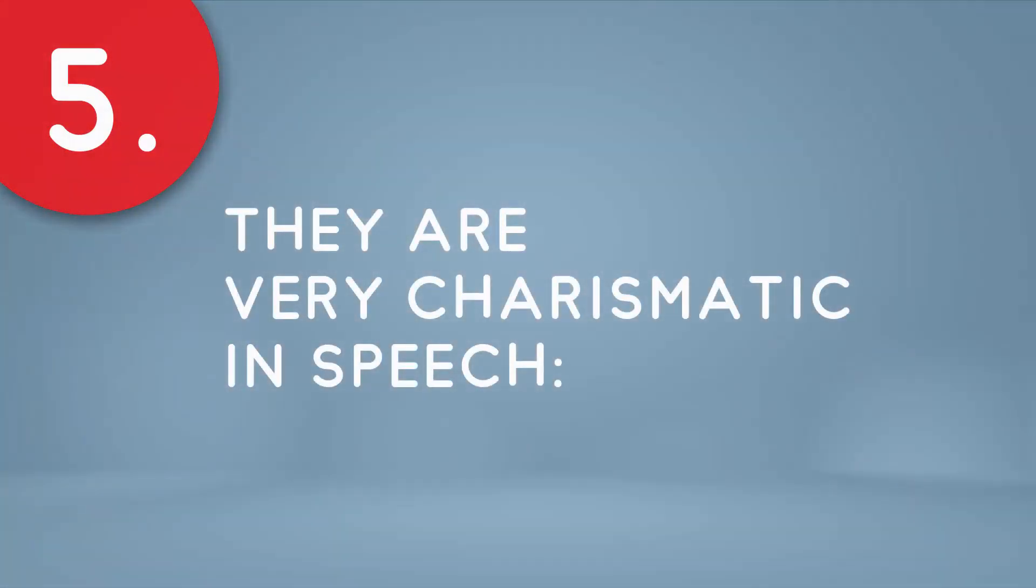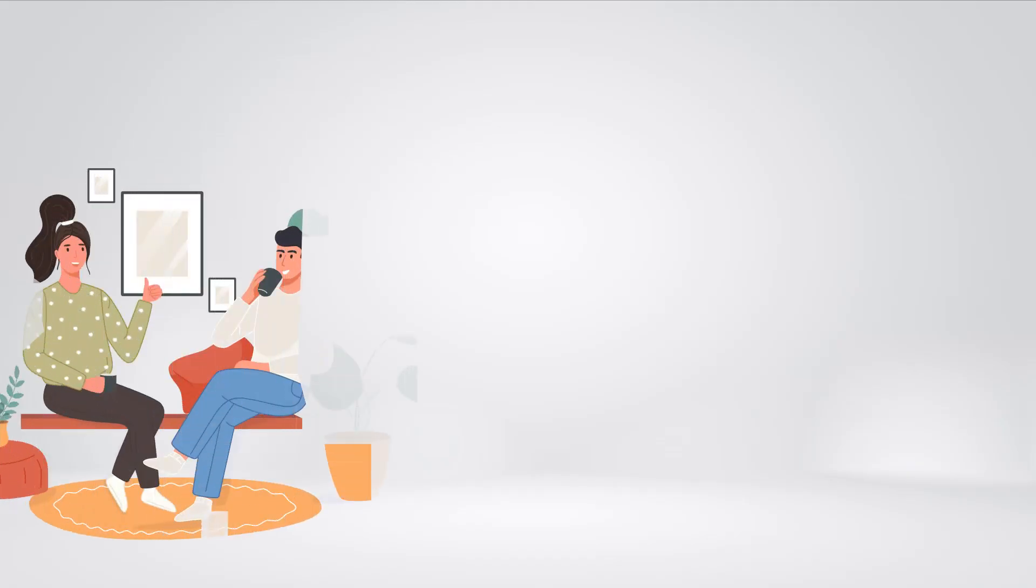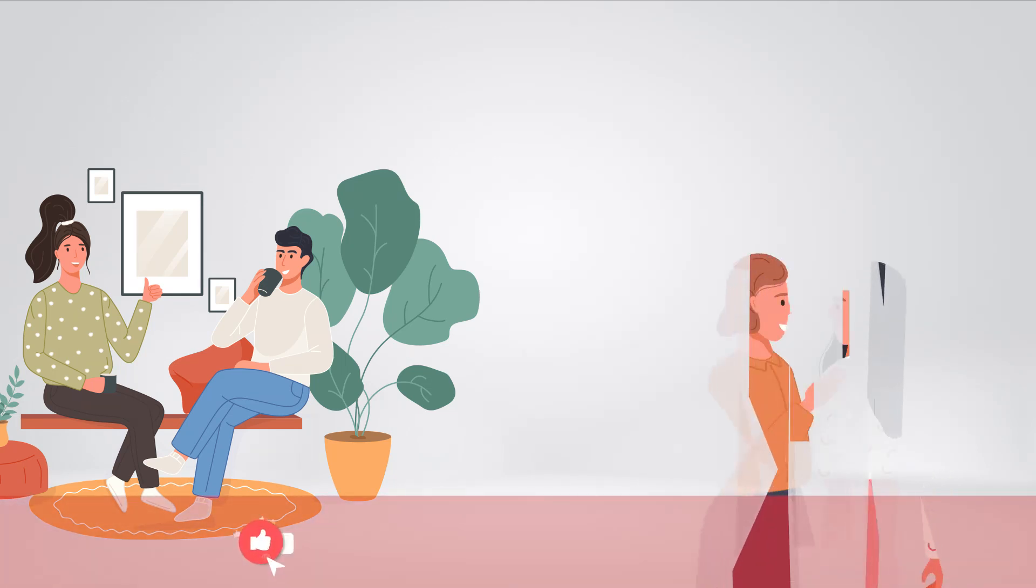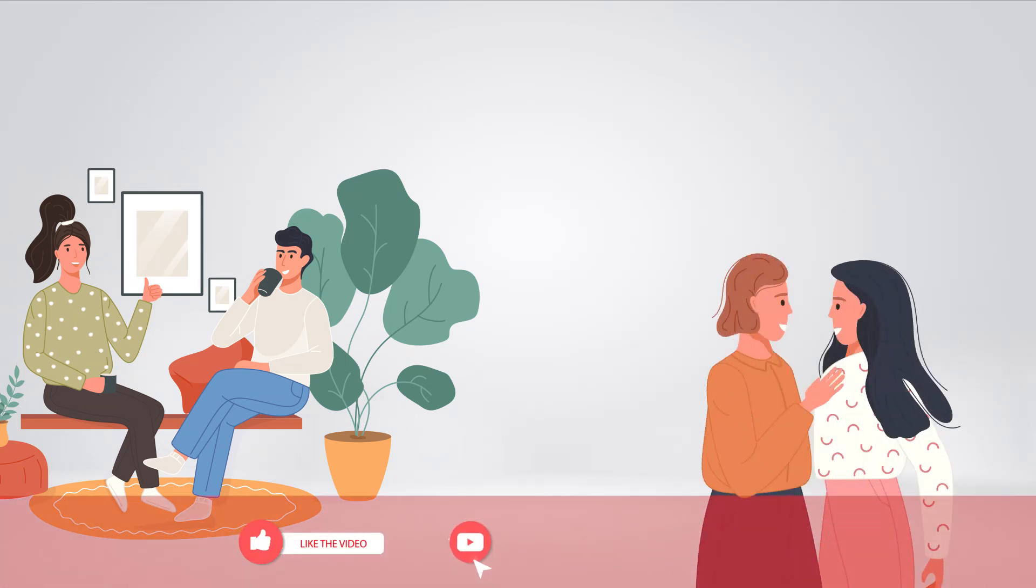Number 5: They're very charismatic in speech. Do you know those people that draw you in? Well, that could be a sociopath. The most interesting and exciting thing you'll notice about them is that they have this thing about them, this facade, this charm, and how they speak to people.